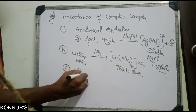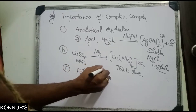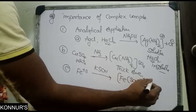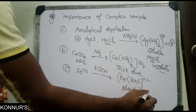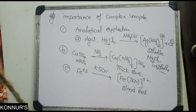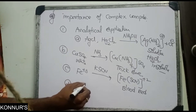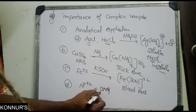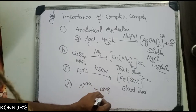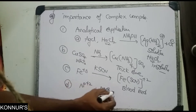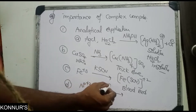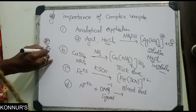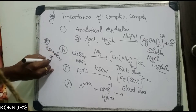Next, Fe3+ with potassium thiocyanate gives [Fe(SCN)]2+, which is blood red in color — this is used for identification of iron. Nickel (Ni2+) using DMG (dimethylglyoxamato ligand) forms a complex that allows easy identification of nickel. Next, EDTA is used for estimation of hardness of water.